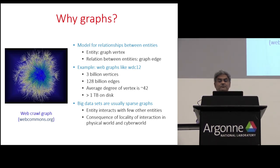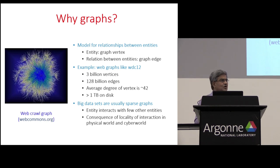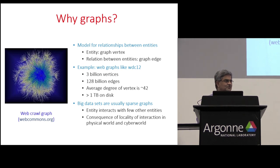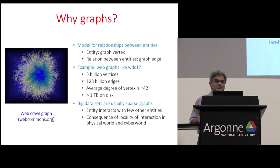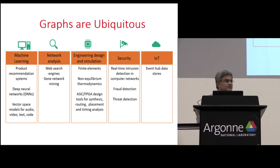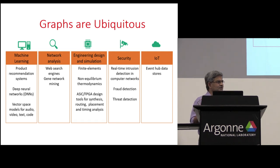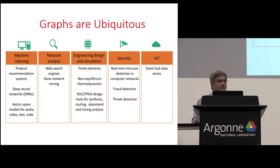A lot of big data sets are usually sparse graphs because an entity typically interacts with very few other entities — this is a consequence of locality, both in the physical world and in the cyber world. There are about 2 billion people who use Facebook, but how many of them are your friends? Even if you're Bill Gates, it's really a very small fraction of people on your friends list — so that's what leads to sparsity. When I give talks on the importance of graphs, a lot of people in companies say they believe graphs are important but aren't sure they actually have one.